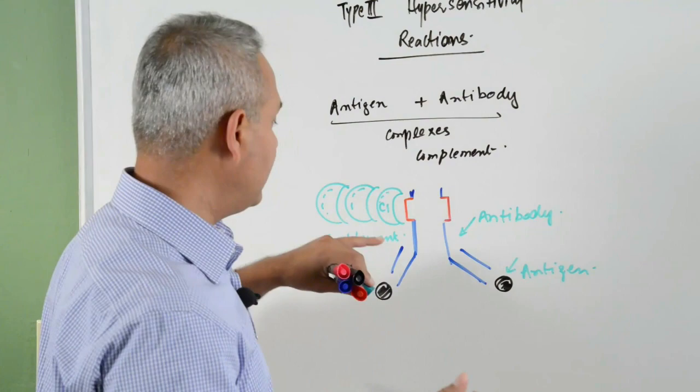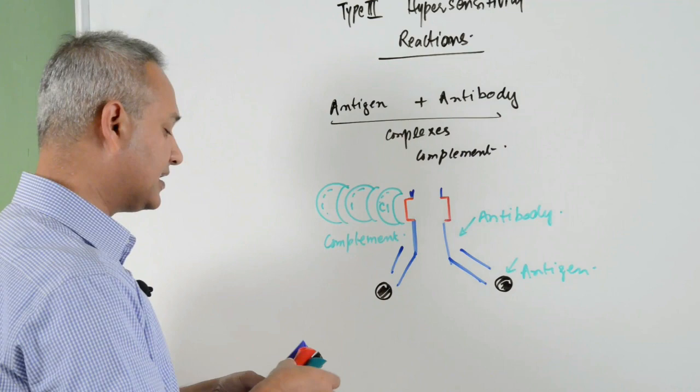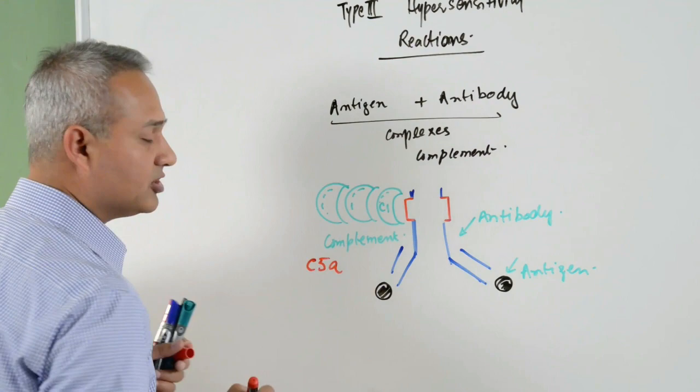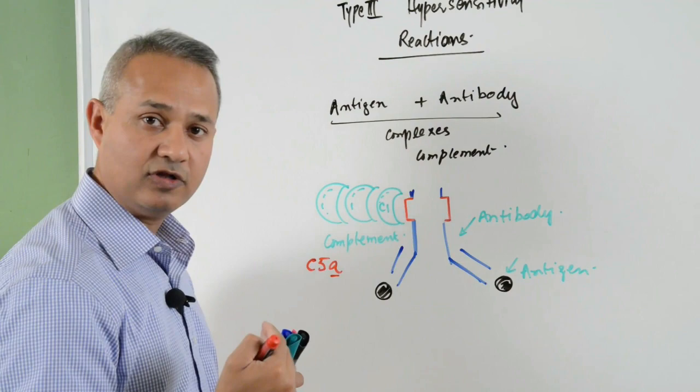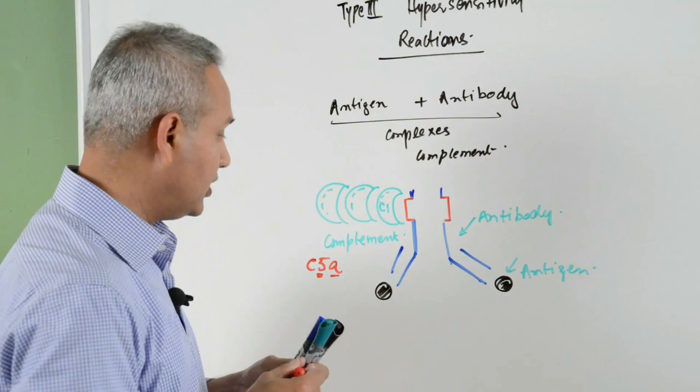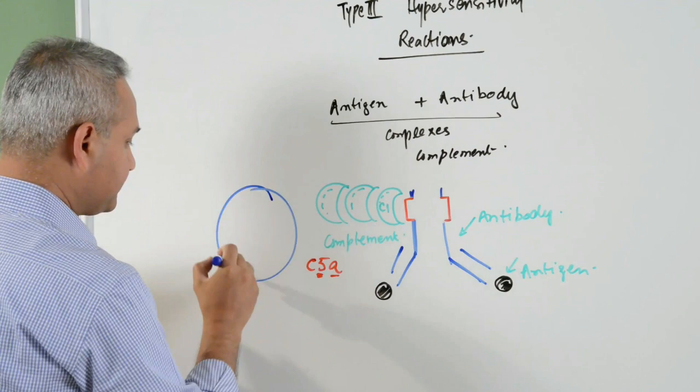Now, wherever there is complement, what happens is there is complement activation and one important part of the activated complement, one fragment is C5a, which is chemotactic for neutrophils. A for arrival, it asks for the arrival of the cells. Which cells? The cells which have 5 lobes, that are neutrophils. It is a chemotactic factor for the neutrophils.